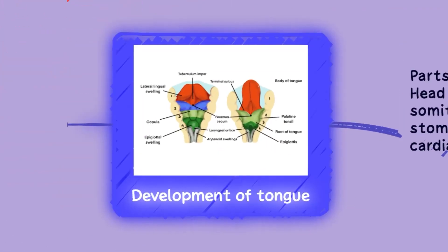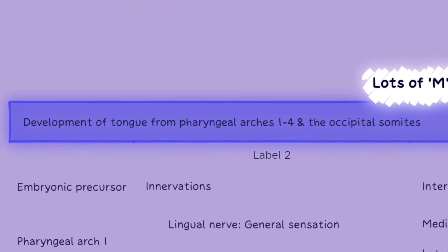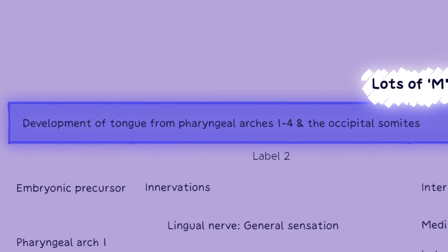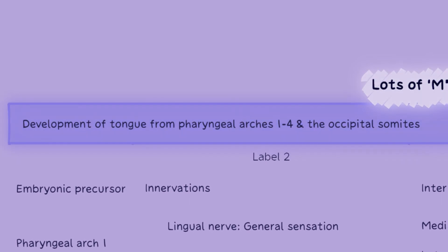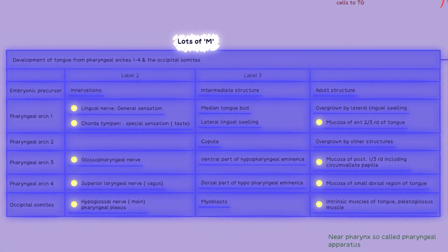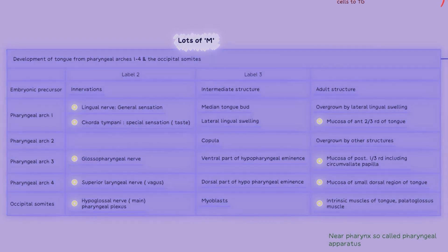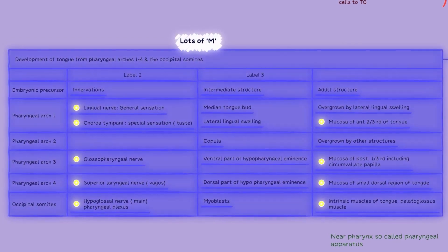Lastly, coming to the development of the tongue. The tongue is derived from pharyngeal arches 1 to 4 and occipital somites. You can make a note of this table from the mind map for quick reference on the development of the tongue.